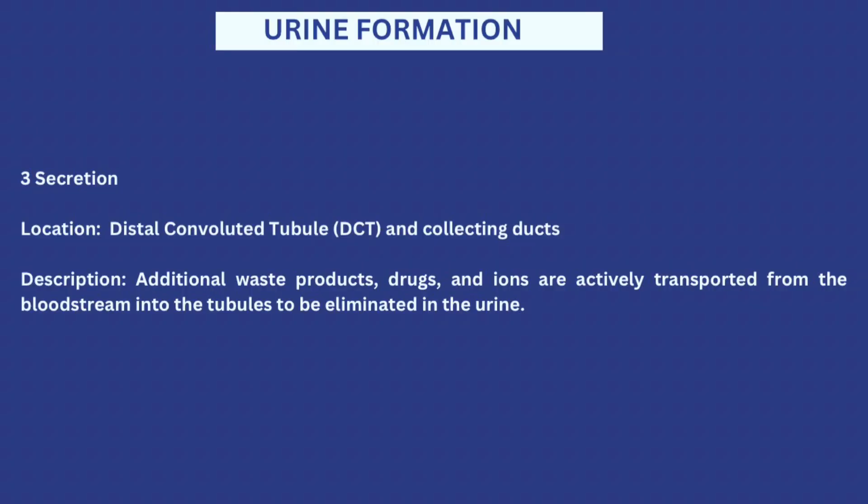The next part of urine formation is secretion. What happens in secretion is that additional waste products like drugs and ions are actively transported from the bloodstream into the tubules to be eliminated in urine. I need you to follow along to understand what happens when the body forms urine, so that you know which part of the nephron each type of diuretic acts upon. Now let's talk about the different types of diuretics and how they work.